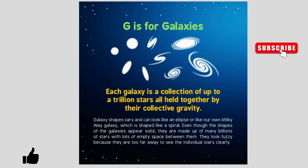G is for galaxies. Each galaxy is a collection of up to a trillion stars, all held together by their collective gravity. Galaxy shapes vary and can look like an ellipse or like our own Milky Way galaxy when it is shaped like a spiral. Even though the shapes of the galaxies appear solid, they are made up of many billions of stars with lots of empty spaces between them. They look fuzzy because they are too far away to see the individual stars clearly.